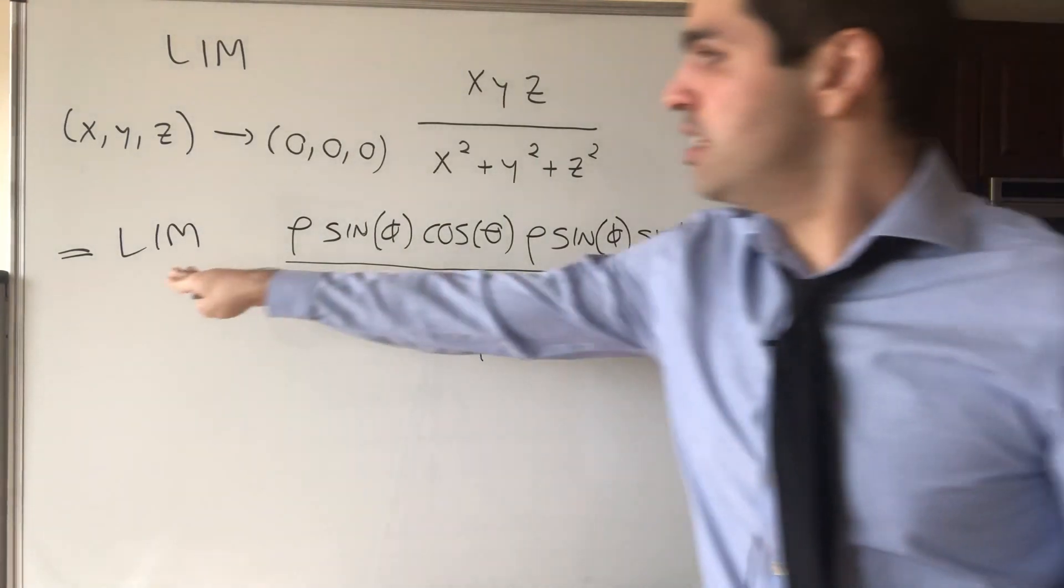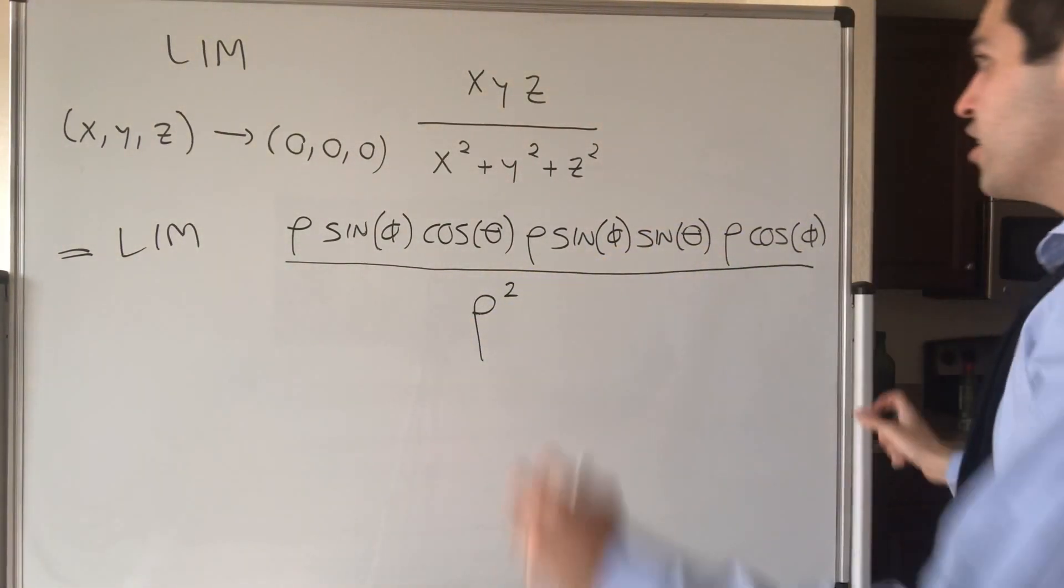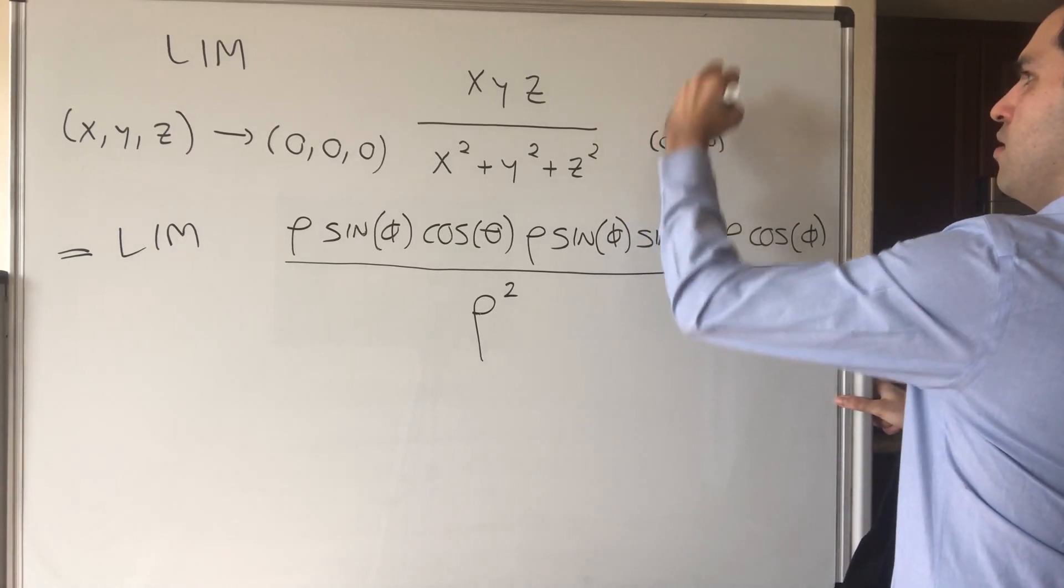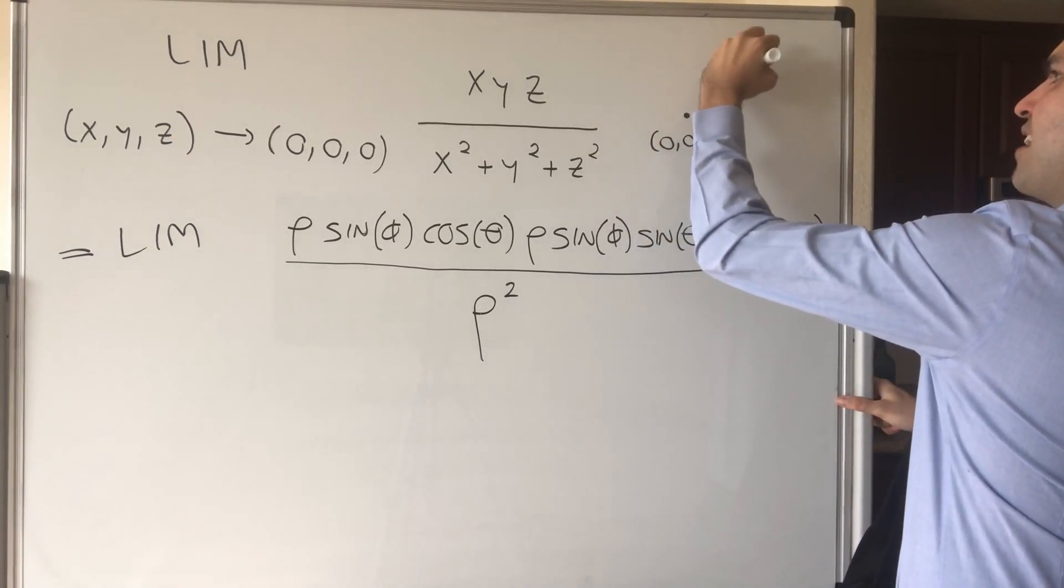Now, the question is, what bounds do we put here? Well, here's the issue. So this is zero, zero, zero, and this is, let's say, your point XYZ.